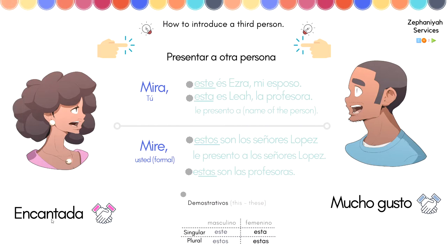'Nice to meet you' — 'encantada' or 'encantado,' or 'mucho gusto.' Now, you see these highlighted — these are demonstrative pronouns. In Spanish you have masculine, feminine, singular, and plural: 'este' (masculine singular), 'estos' (masculine plural), and the feminine 'esta' or 'estas.' For example: 'estas son las profesoras,' 'estos son los señores López' (plural); 'este es Ezra' and 'esta es Lía' (singular).